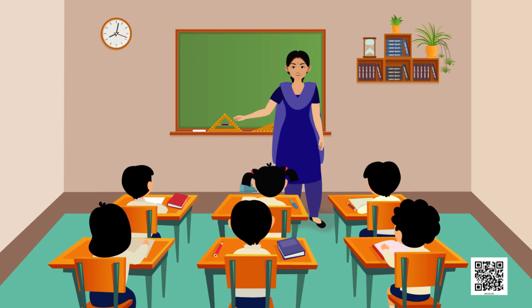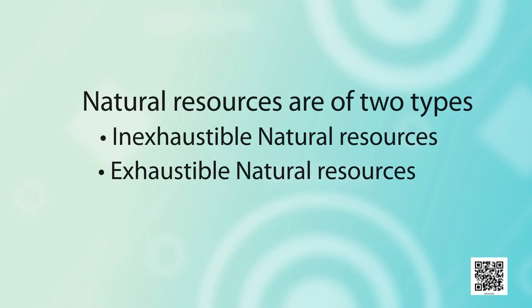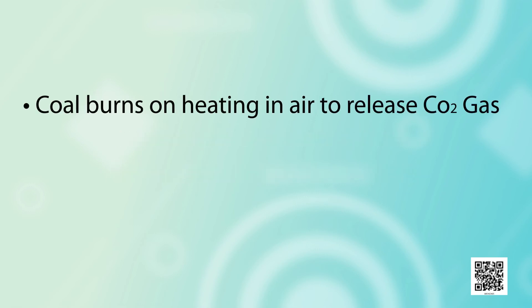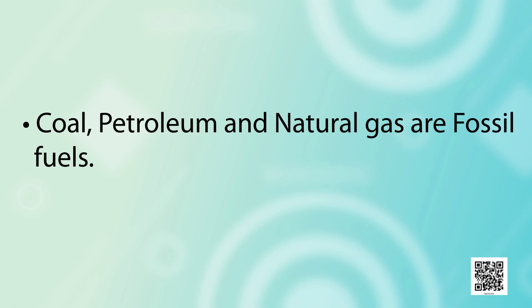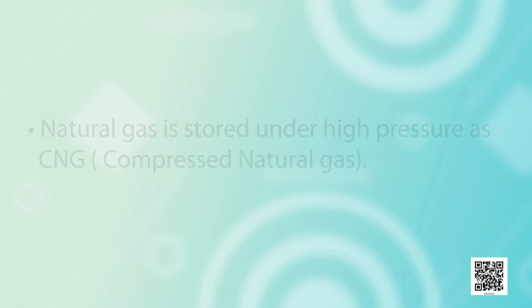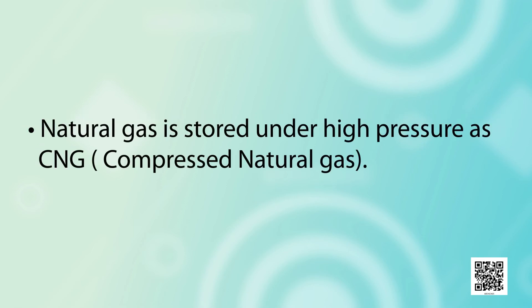Let us now quickly revise whatever we have learnt in this chapter. Today we have learnt that natural resources are of two types: inexhaustible natural resources and exhaustible natural resources. Coal burns on heating in air to release carbon dioxide gas. Coke, coal tar and coal gas are the products of coal. Coal, petroleum and natural gas are fossil fuels. And natural gas is stored under high pressure as CNG — compressed natural gas.